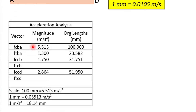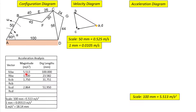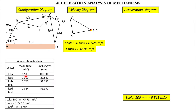Now we have a complete table with centripetal and tangential values for links AB, BC, and CD. We are assuming the centripetal acceleration of link AB, which is 5.513 m/s², as 100 mm. So 100 mm = 5.513 m/s², which means 1 m/s² = 100/5.513 = 18.1389, approximately 18.14 mm.